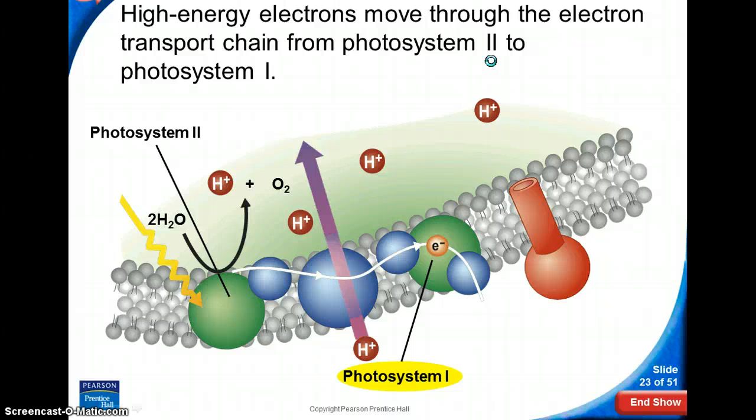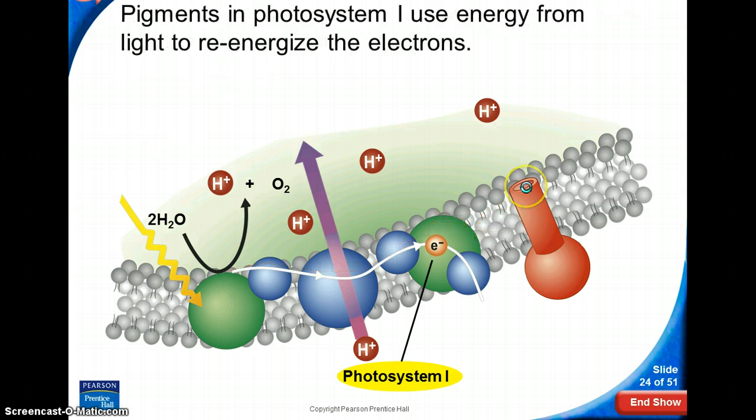So eventually what happens is that the electron then has moved through this whole system right here and ends up into a molecule called photosystem 1. Same thing. Contains chlorophyll. And it captures sunlight. So we have the sun hitting this. And that gives it the last boost, that last piece of energy, so that it moves through the last one of these electron carriers.